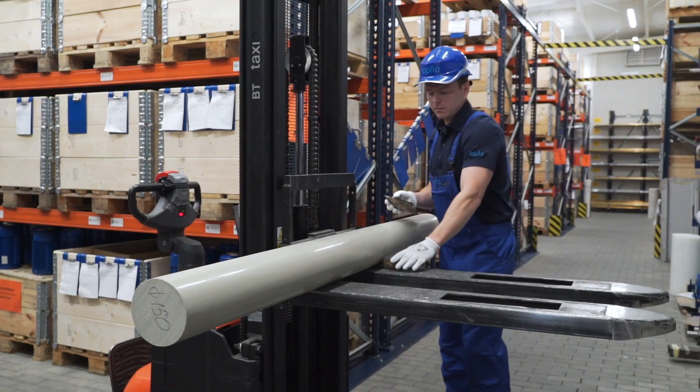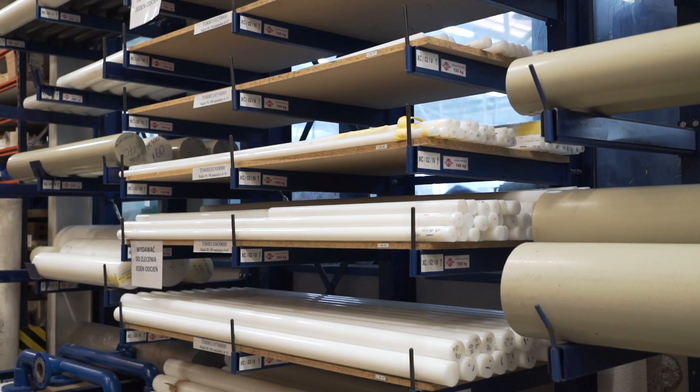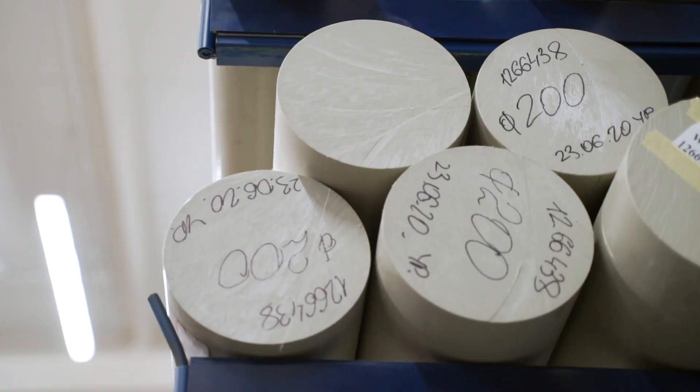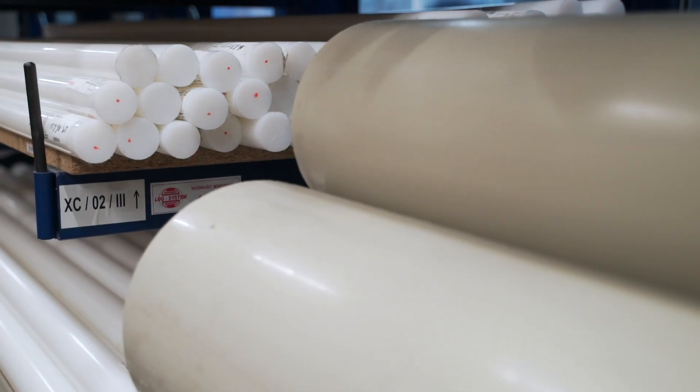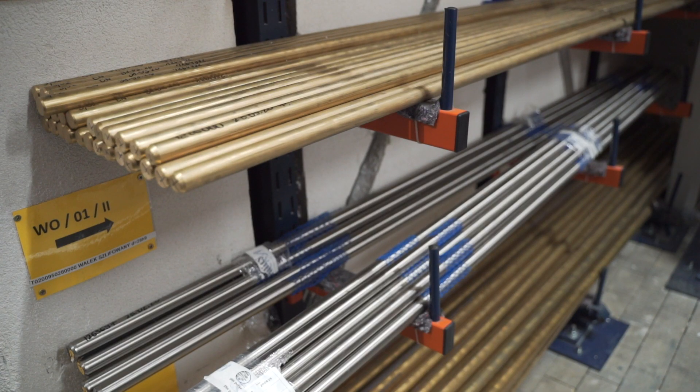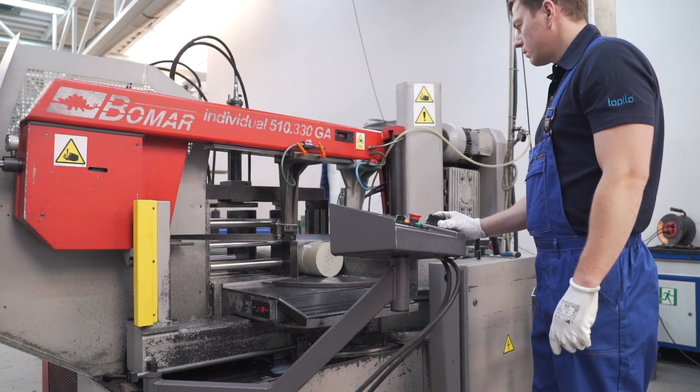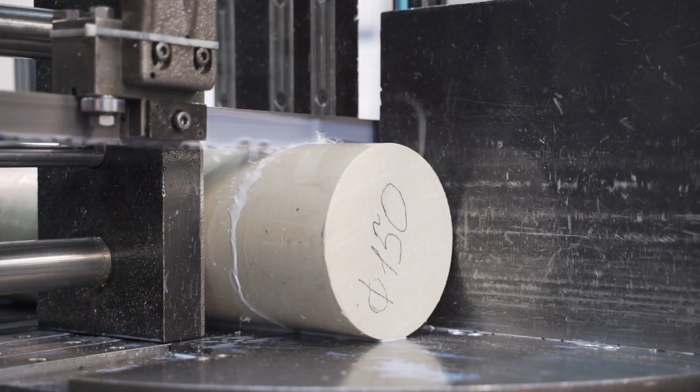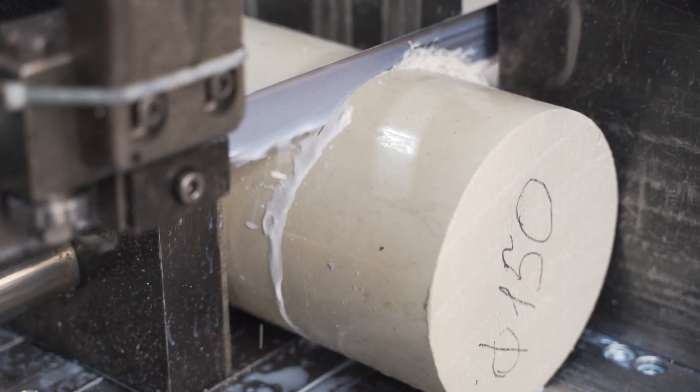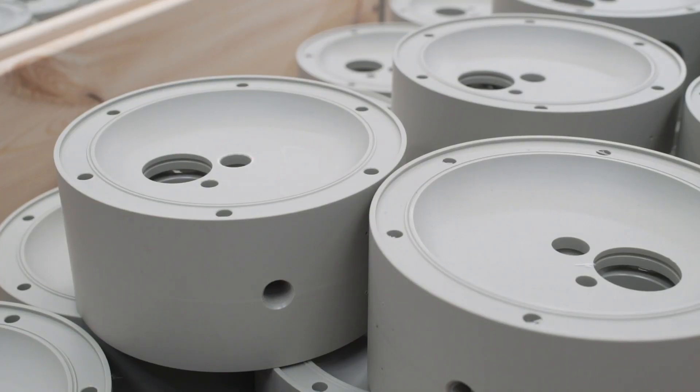Based on a production order, the warehouse operators prepare materials that will be used for production, usually polypropylene or polyethylene and steel or brass rods. Then, the raw materials are cut to appropriate dimensions with a saw. They are later processed on CNC machines.